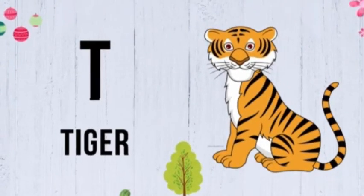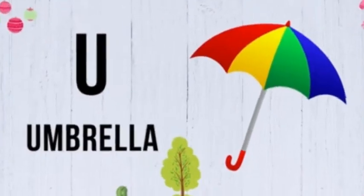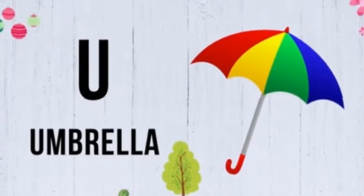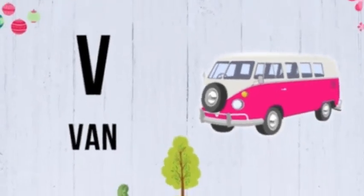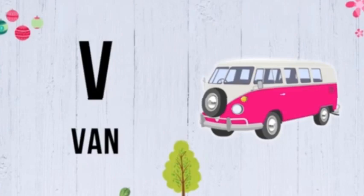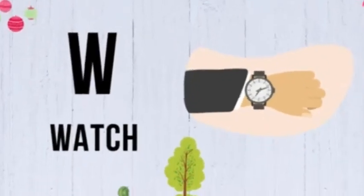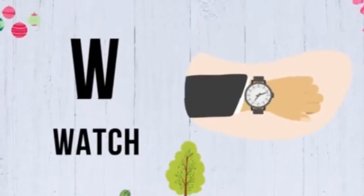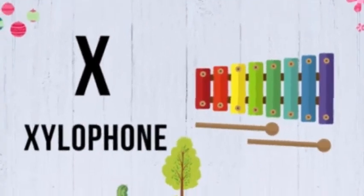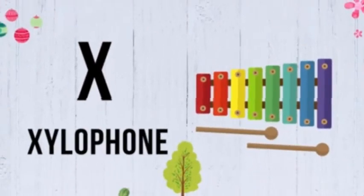T for tiger, U for umbrella, V for van, W for watch, X for xylophone.